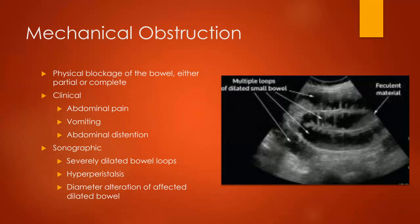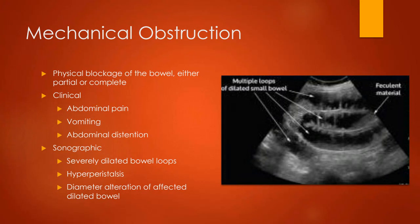Moving to gastrointestinal obstruction. The first type is mechanical obstruction — any physical blockage of the bowel, either partial or complete. The patient will have abdominal pain, distension, and vomiting. With a complete mechanical obstruction, nothing can get through, so anything eaten has to come out — if it can't exit one end, it comes out the other. On ultrasound, we see severely dilated bowel loops due to all that backup and pressure, hyperperistalsis as the bowel tries harder to move everything through even though it can't, and diameter alterations of the affected dilated bowel.